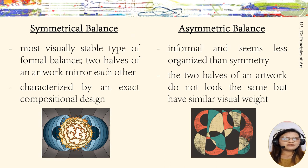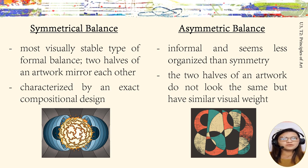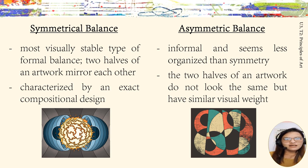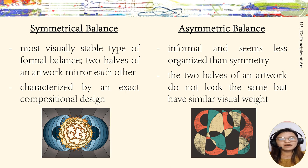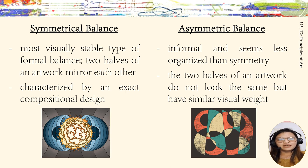First, we have symmetrical balance. Symmetrical balance is a type of formal balance in which two halves of an artwork mirror each other. As you can see in the picture, it is well-balanced horizontally and vertically — it is mirrored. This type of balance is familiar and common, and it imposes a strong sense of order and stability on both the composition and the subject.